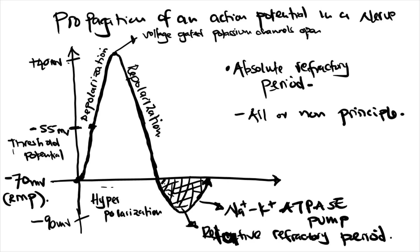At threshold, voltage-gated sodium channels open for less than one millisecond, shooting the membrane potential from negative 55 to positive 40 — this is depolarization. Voltage-gated potassium channels then open, potassium moves out, and the membrane potential goes back to negative — this is repolarization. When more negative than resting, that is hyperpolarization; the ATPase pump restores it during the relative refractory period.